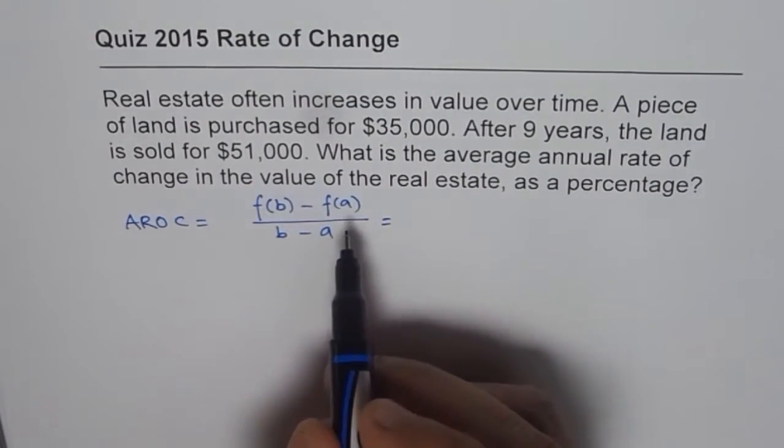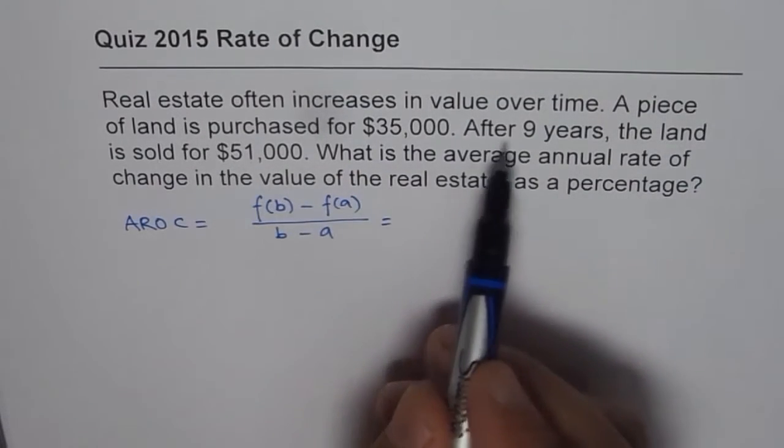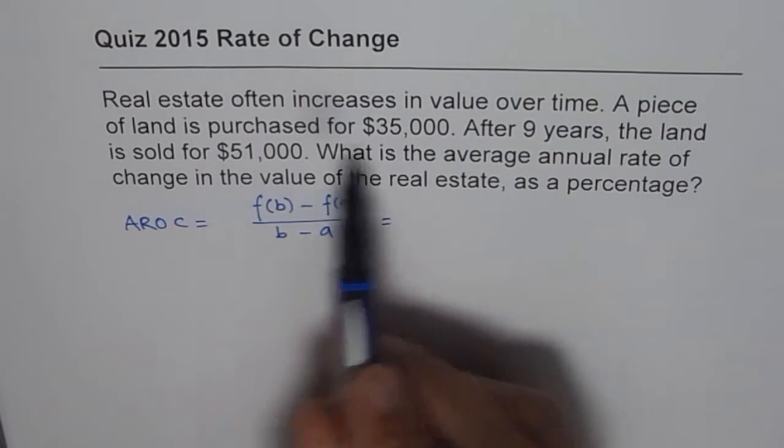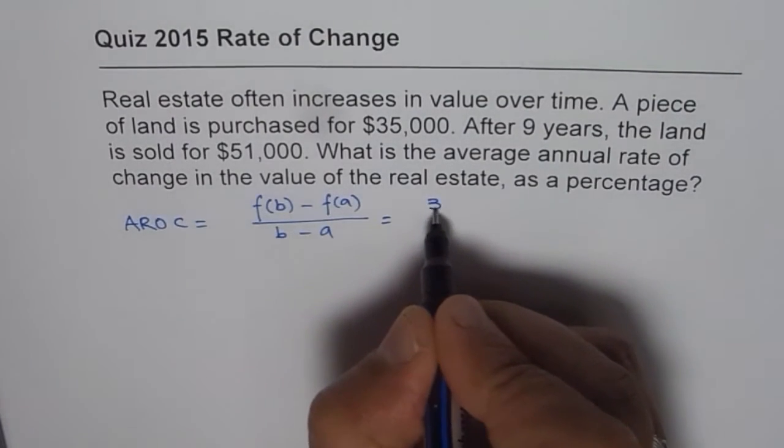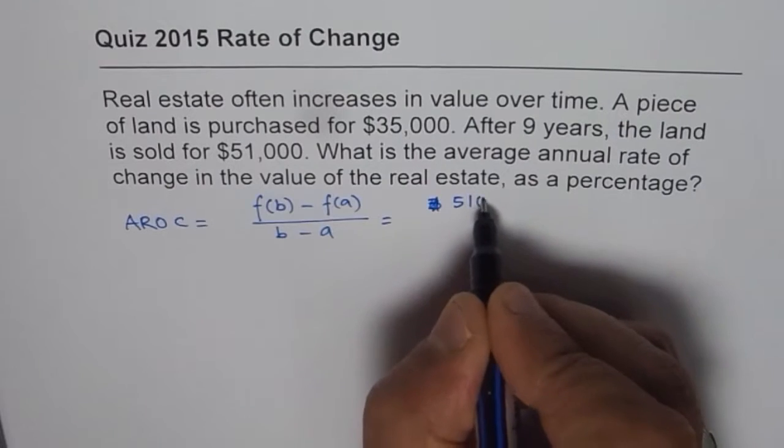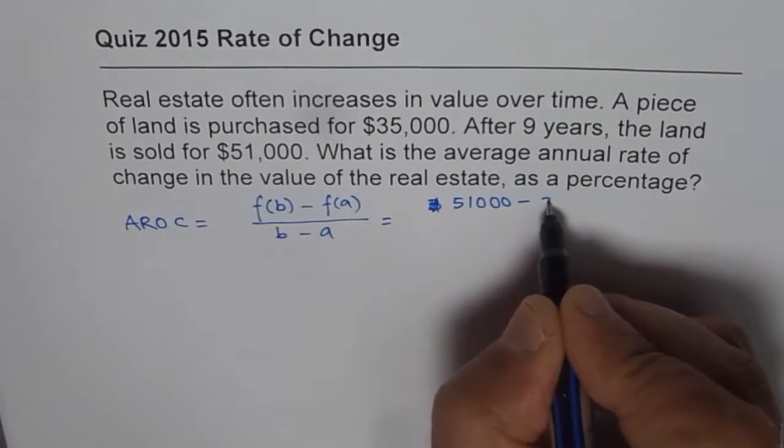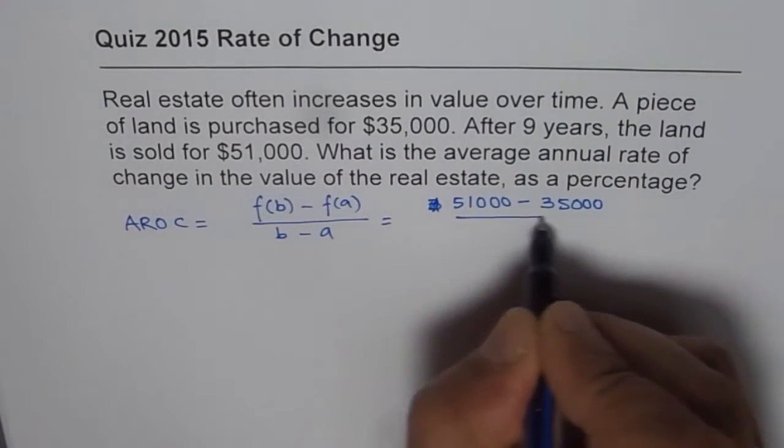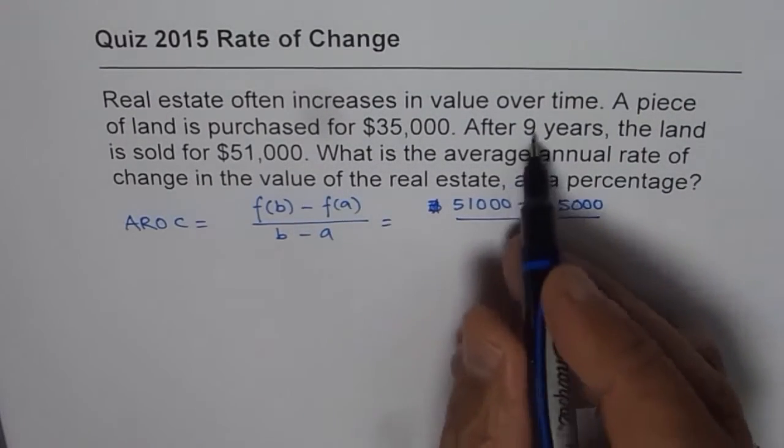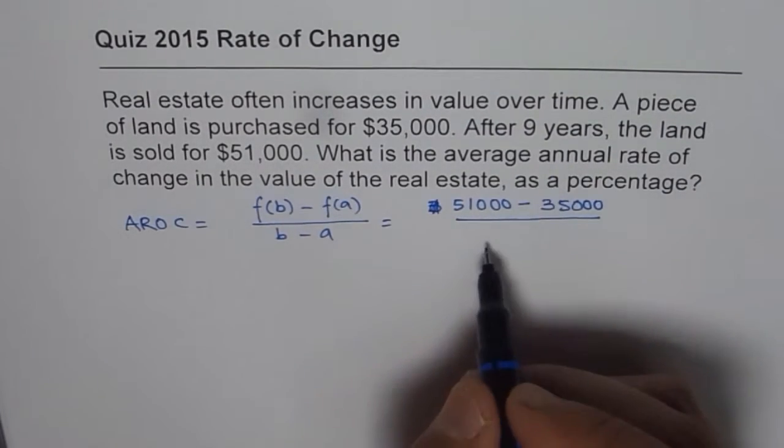In this case, the value has appreciated in nine years from $35,000 to $51,000. So, we will write here, $51,000 minus $35,000 divided by what? Nine years, right? So, at times you could make a mistake here. You may write nine minus one.